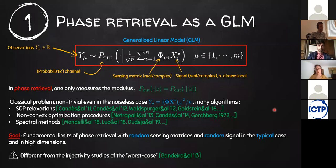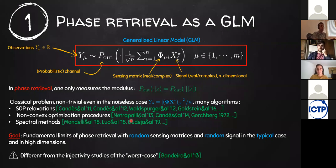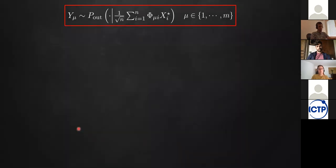Here we are taking a quite specific point of view: we are trying to understand the fundamental limits of phase retrieval when considering a random setup. We consider a random matrix and random signal, and try to understand the typical properties of this problem — what is the optimal performance. This is very different from other studies that focus on injectivity properties, which become a kind of worst-case bound.